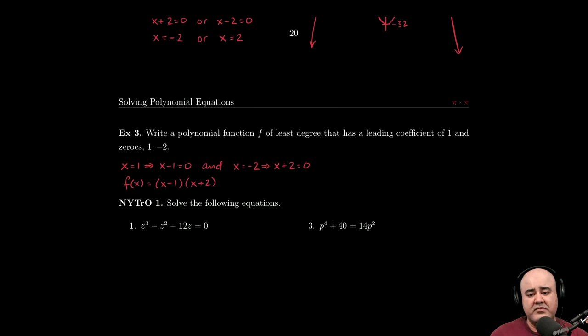Last example. Now we're doing things backwards in this example, instead of being asked to solve an equation, the question is giving us what the zeros are, it's telling us what the leading coefficient is, and it's asking us to come up with the polynomial function.